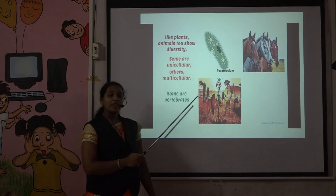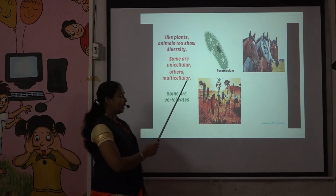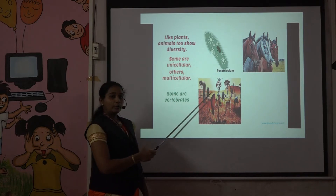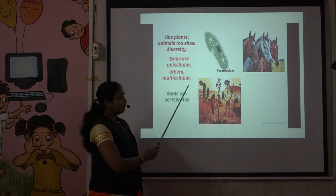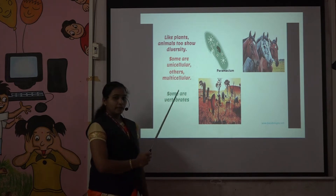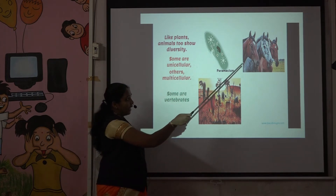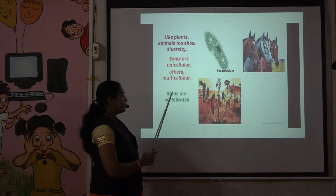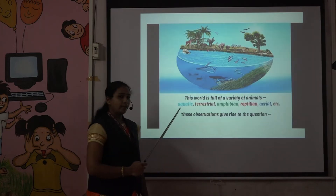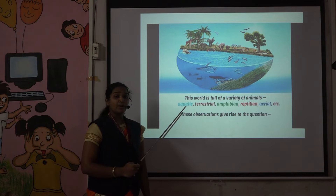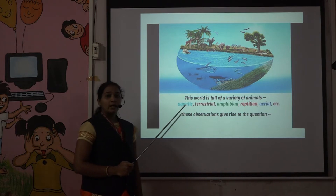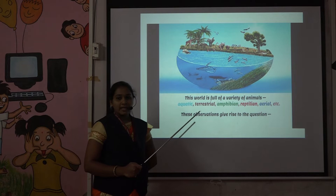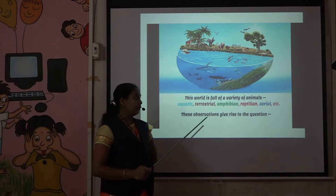Some animals are unicellular, meaning only one cell is present. For example, amoeba and euglena. Some are multicellular — animals and even human beings. Some are vertebrates, meaning there is presence of a backbone, and also invertebrates. All insects are included in invertebrates.